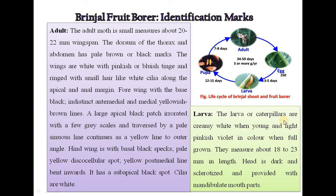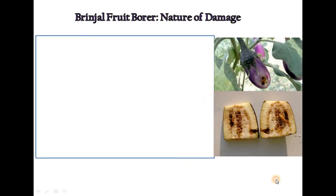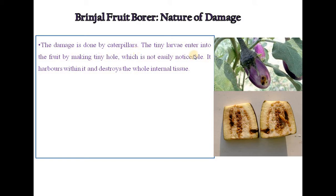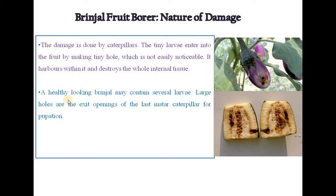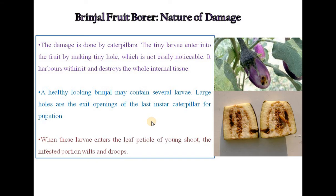In case of larvae, also called caterpillars, they are creamy white when young and light pinkish-violet in color when full grown, measuring about 18 to 23 mm in length. The head is dark and sclerotized, provided with a mandibulate type of mouthpart. The damage is done by caterpillars: tiny larvae enter the fruit by making tiny holes, not easily noticeable, and destroy the whole internal tissue. A healthy-looking brinjal may contain several larvae. Large holes are exit openings of last-instar caterpillars for pupation. When larvae enter the leaf petiole or young shoot, the infested portion wilts and droops.